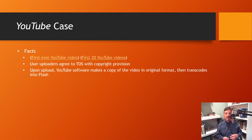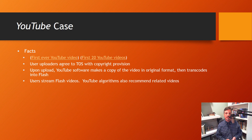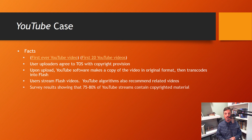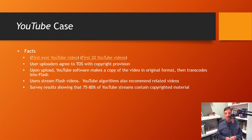When you upload the video to YouTube, YouTube has software that's copying and converting the video you upload into a format that's going to enable it to be streamed. And when you go on YouTube, YouTube uses algorithms to recommend related videos based on your past search history or viewing history. At the time of the case, there was expert testimony and a survey showing that three-quarters or more of all the content on YouTube contained copyrighted material.